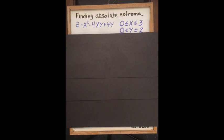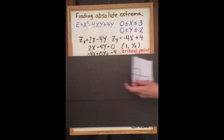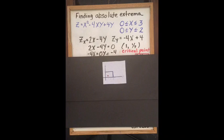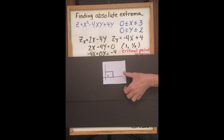Finding absolute extrema given a surface and a restricted domain. Step 1 is to find the partials with x and partials with y, create a system of equations, and solve it. The critical point is (1, 1/2), and you can see that (1, 1/2) is within the domain, so it is a critical point.